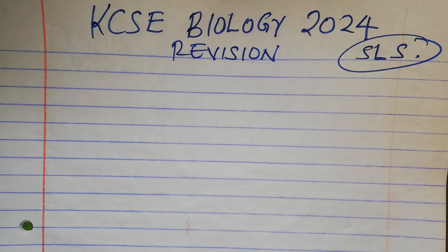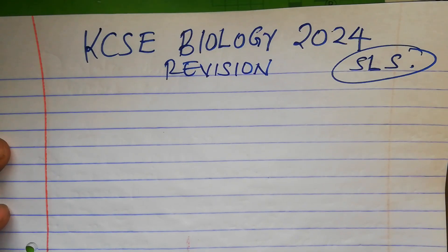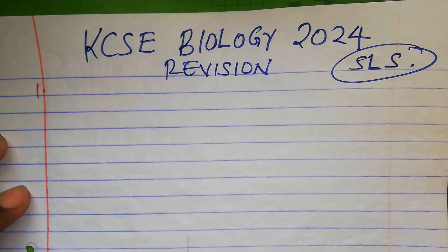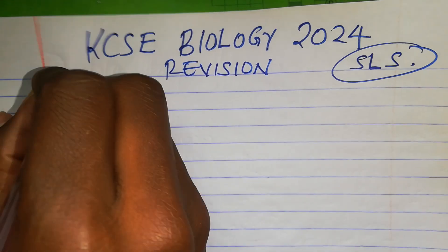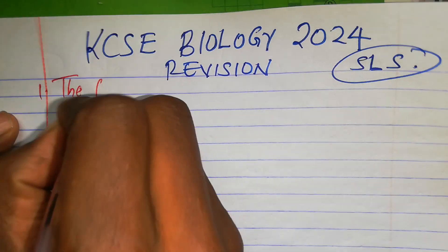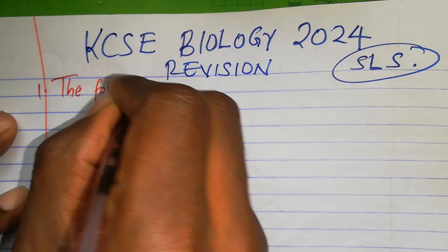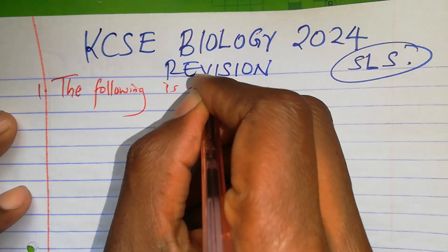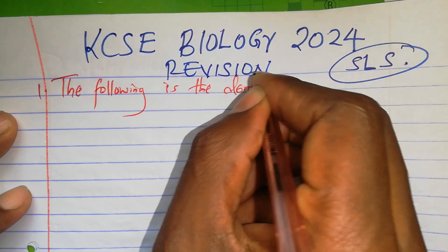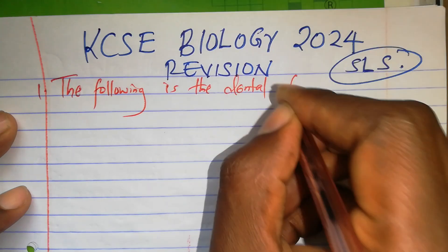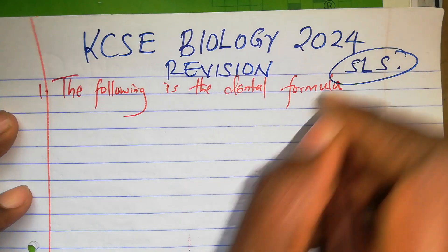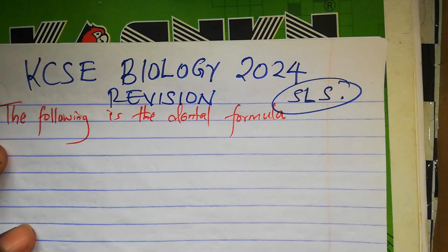Today I have around three questions, and they may have A, B, Roman 1, Roman 2 to discuss with you. The first question: the following is the dental formula of a certain mammal.